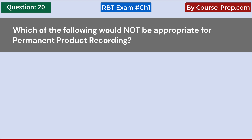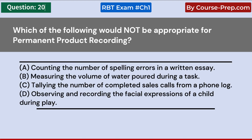Which of the following would not be appropriate for permanent product recording? A. Counting the number of spelling errors in a written essay. B. Measuring the volume of water poured during a task. C. Tallying the number of completed sales calls from a phone log. D. Observing and recording the facial expressions of a child during play. Answer D: Observing and recording the facial expressions of a child during play.